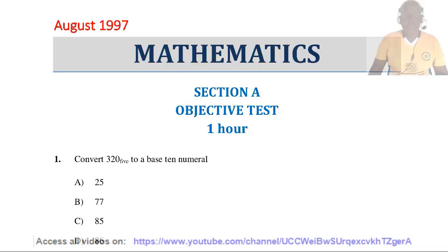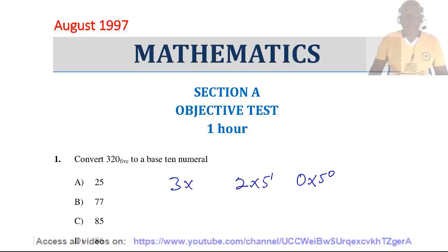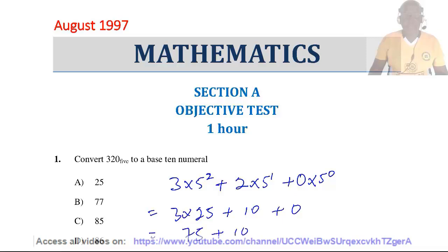Question 1. Convert 320 base 5 to a base 10 number. Since it is base 5, we shall multiply each digit by 5 to the power 0, 5 to the power 1, and 5 to the power 2, then add them. This equals 3 times 5 squared (25) plus 2 times 5 (10) plus 0, which gives 75 plus 10, equal to 85. So the answer is C.